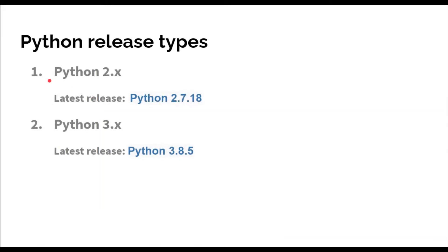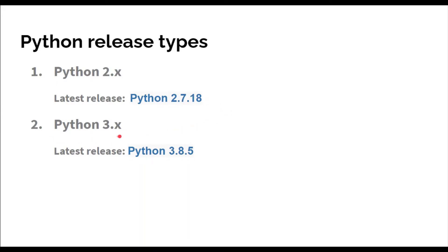Basically there are two types of Python release: first is Python 2.x and second is Python 3.x. Python 2.x was the first release of Python, and later on Python 3.x came. There are very slight differences between Python 2.x and Python 3.x. Some programmers like to program in Python 2.x and some like Python 3.x.